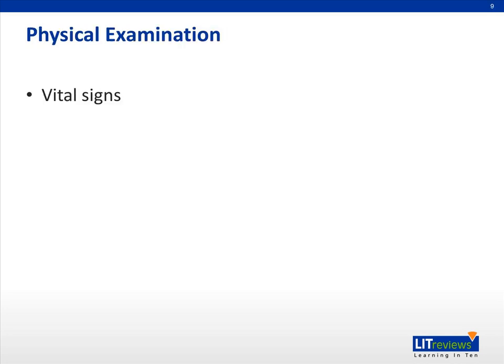The vital signs can provide important information to the cause of edema, such as fever in an edematous child secondary to sepsis, as well as the current condition of the patient, such as tachycardia, tachypnea, and hypotension in an edematous child with decompensated cardiac failure. Another essential information is serial weight measurement, which we can use to monitor the trend of edema and response to treatment.